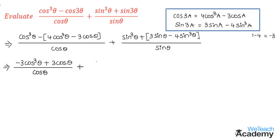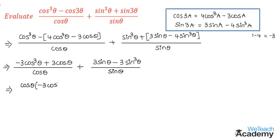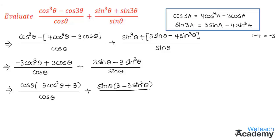Writing 3sin θ first, we get 3sin θ minus 3sin³θ divided by sin θ. Taking cos θ as the common factor in the first term gives cos θ times (3 minus 3cos²θ) divided by cos θ. Taking sin θ as the common factor gives sin θ times (3 minus 3sin²θ) divided by sin θ. The cos θ and sin θ in numerator and denominator cancel.